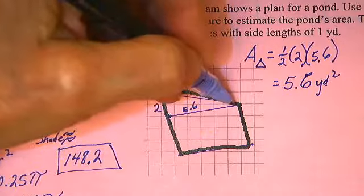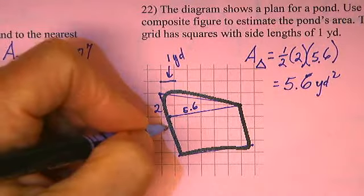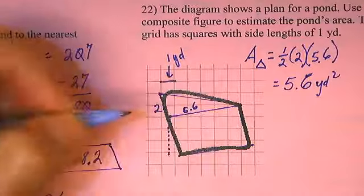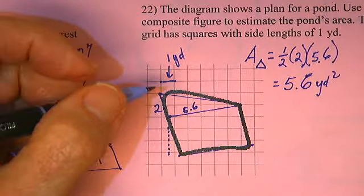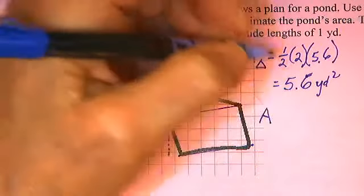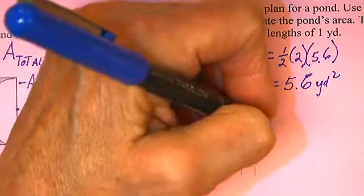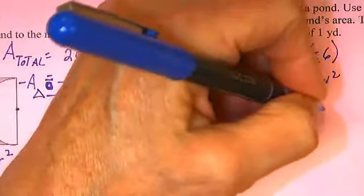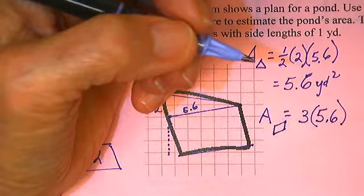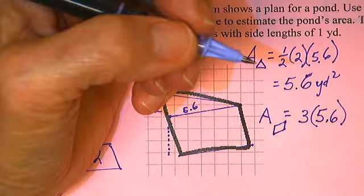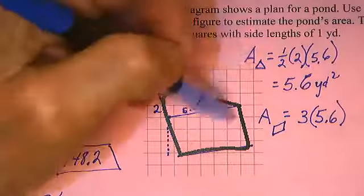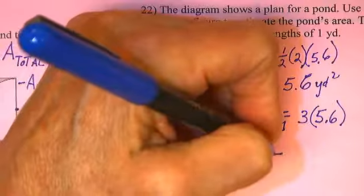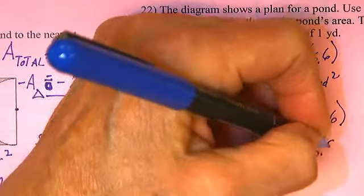I am going to pretend that this is a parallelogram of height 3 and base 5.6. 5.6 times 3. I am going to call the area of my big part here 16.8 yards square.